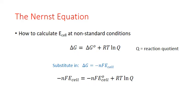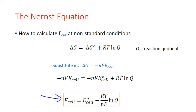Rearranging by dividing both sides by negative N times F, we get the Nernst equation: the non-standard electrochemical cell potential equals the standard electrochemical cell potential minus R times T divided by N divided by F, times the natural log of Q. Here Q is the reaction quotient with whatever non-standard concentrations we have substituted in.